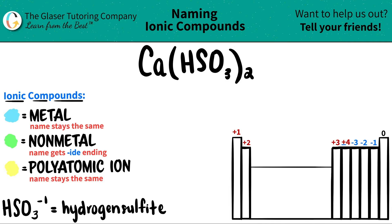Today we are going to be naming the ionic compound Ca(HSO₃)₂. Now here's a little trick: if you have a compound that has three or more different elements, in this case we have four...